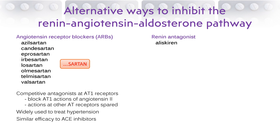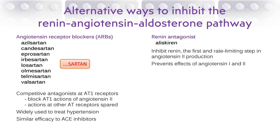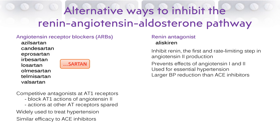Renin inhibitors inhibit the enzyme action of renin, which is the first and rate-limiting step in the production of angiotensin 2. They therefore prevent the production of angiotensin 1 as well as angiotensin 2. Renin inhibitors are a more selective way of interfering with the pathway than ACE inhibitors because angiotensinogen is not the only substrate for ACE. They are used to treat hypertension and are at least as effective as ACE inhibitors at lowering blood pressure.